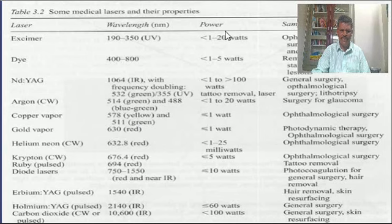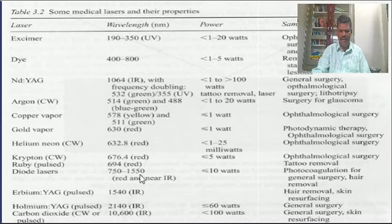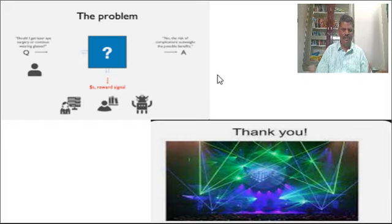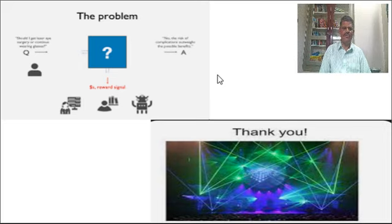Various types of wavelengths are produced by laser beams, along with different power output values in watts, depending on where each laser is applicable. This slide shows the different kinds of lasers along with their specifications. Using a laser presents no significant problems, and there are many advantages to laser use in the medical field.